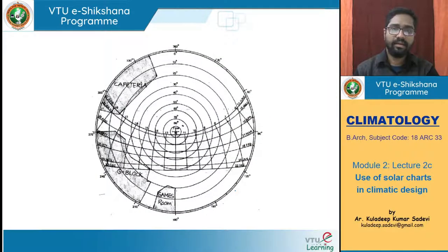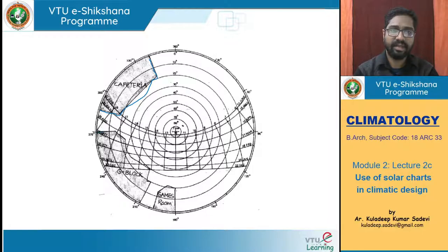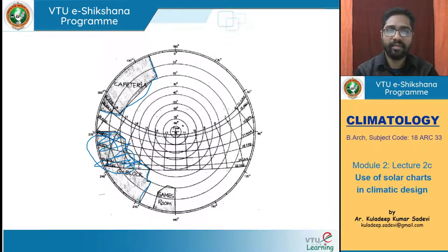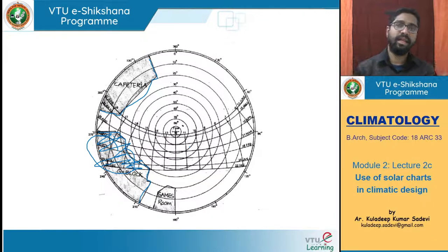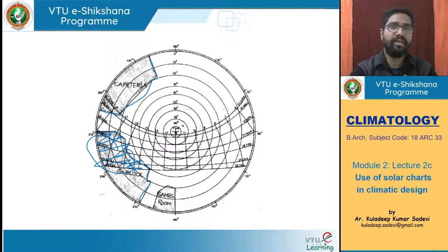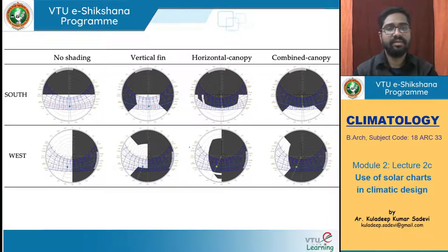Here is a sun path diagram for approximately 24 degrees north latitude. A cafeteria and another building block are drawn on it. After 3 PM in October, November, December, and January–March, the building blocks sunlight at that particular point. This is how we understand whether a place will get sunlight by drawing existing structures, and determine which side to place windows, where to allow sun, and where to cut it down — a complete site analysis and assessment tool.